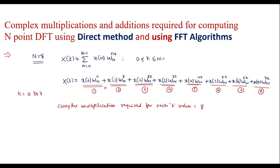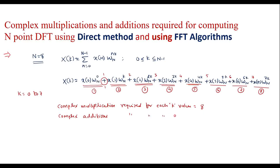Similarly, for complex additions: here there is one addition, then a second addition, a third addition, a fourth addition, a fifth, a sixth, and a seventh. For N equal to 8, we need 7 complex additions. So complex additions required for each k value is 7.